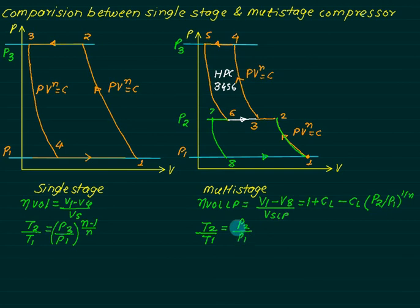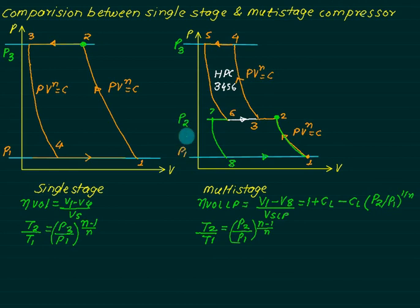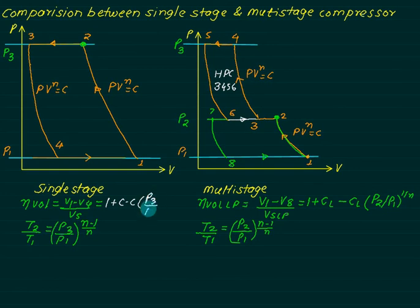The first advantage is that the delivery temperature in multi-stage is T2, which is lower than in single stage because P3/P1 is much larger than P2/P1. So delivery temperature has been successfully reduced in multi-stage compression, and the air coming out is cooler, increasing reservoir capacity. For the LP cylinder, η_vol = 1 + C_L − C_L × (P3/P1)^(1/n).